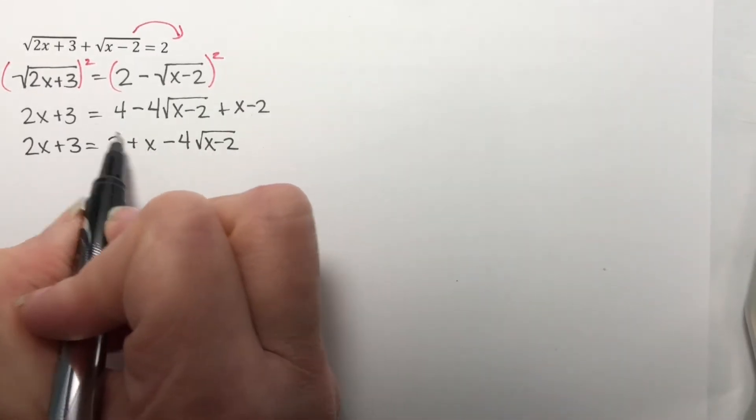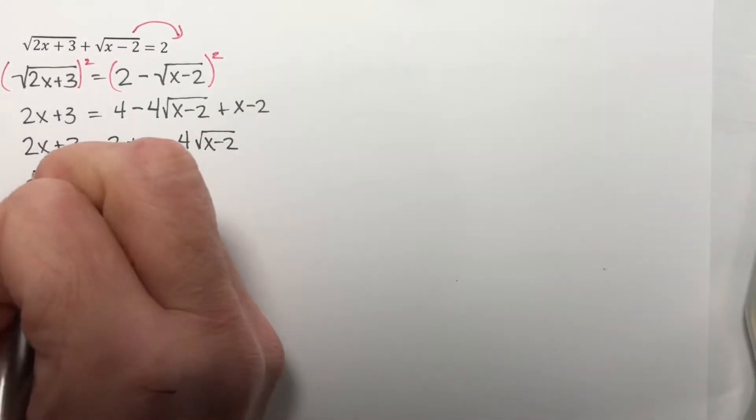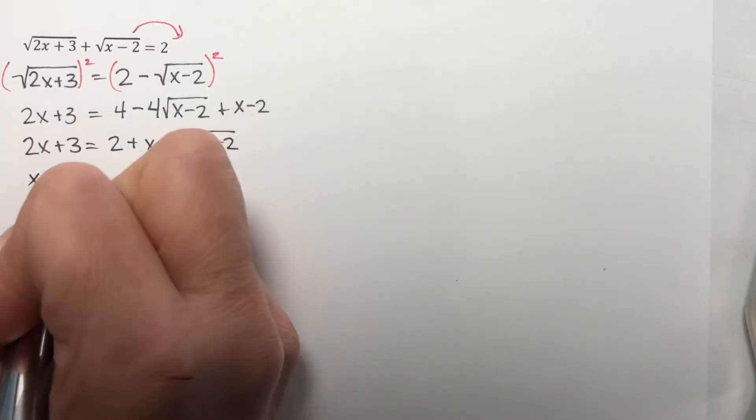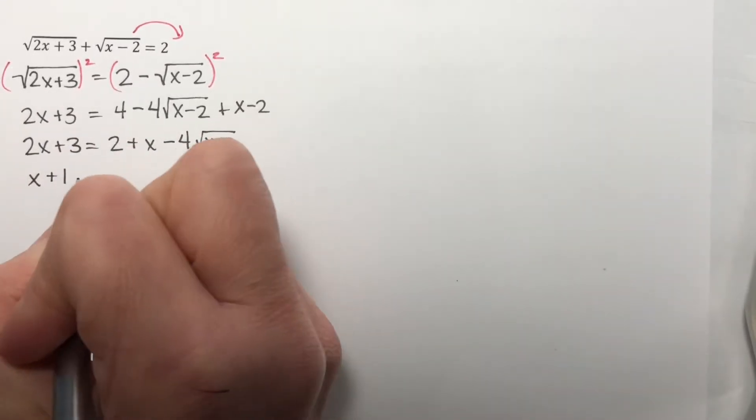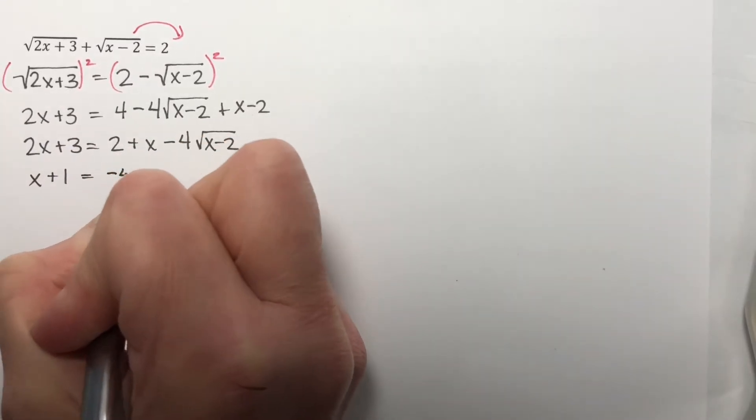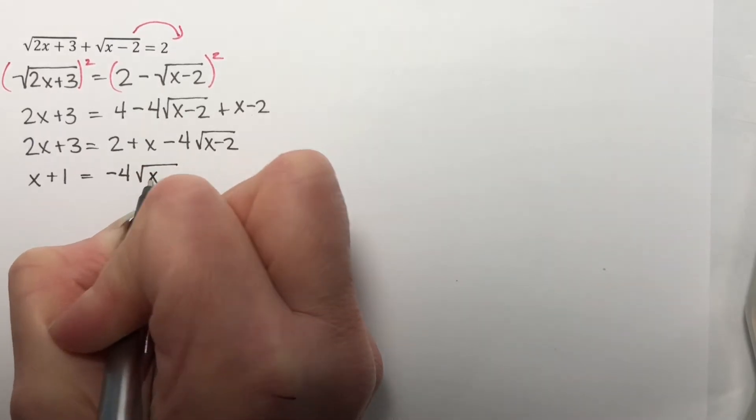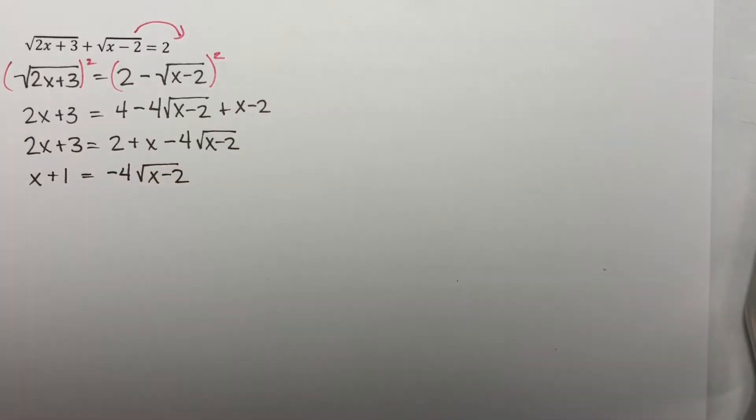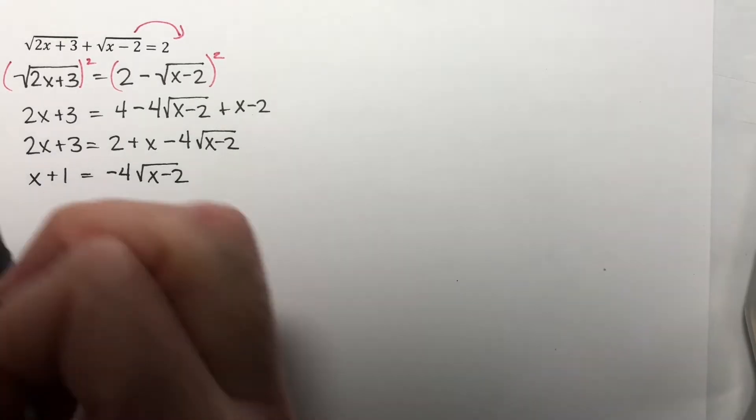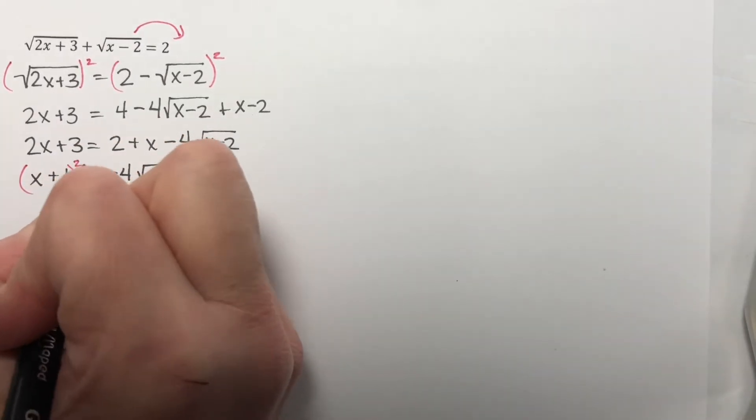Now move each of these over to here. So if I subtract x, I get x, subtract 2, and I get a 1. So I have x plus 1 is equal to negative 4 times the square root of x minus 2. If I could divide both sides by the negative 4 and have it divide evenly, I would do that, but since I don't, I'm just going to square both sides.